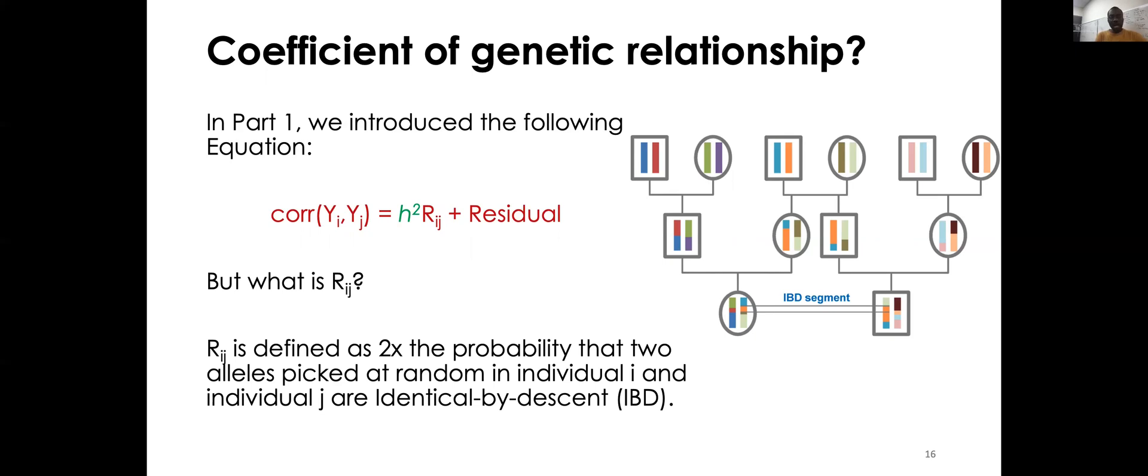So this R_ij parameter or coefficient of relationship has a formal definition, and it is defined as two times the probability. And so what is that probability? Imagine that you can observe the DNA of two individuals and you look at a particular position of their DNA, of their genome. Let's say a locus. You look at this locus, and you want to know at a particular locus you have a set of alleles. Now people have different forms of DNA, different sequences there. And the question is, if you take two alleles at random, one in individual I and one in individual J, what is the probability that those two alleles are identical by descent?